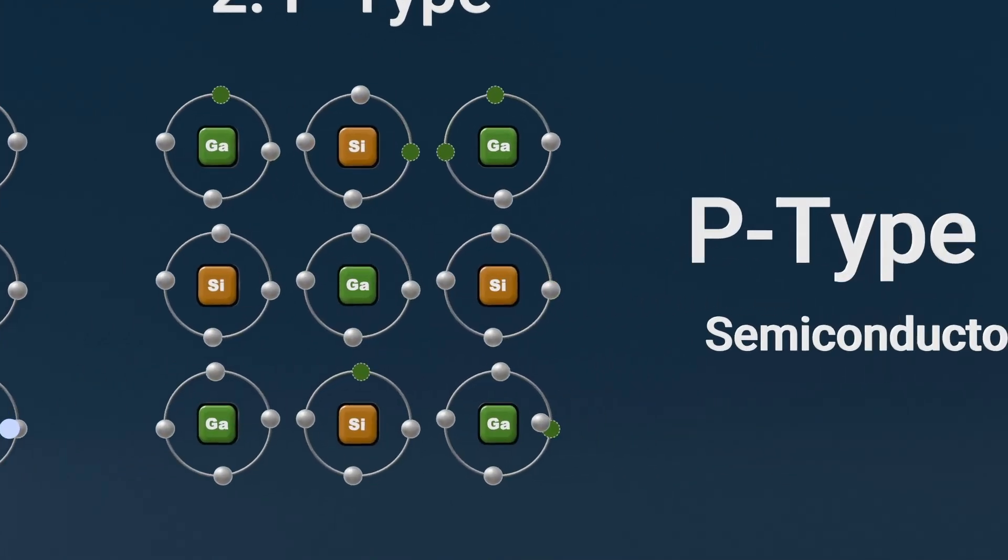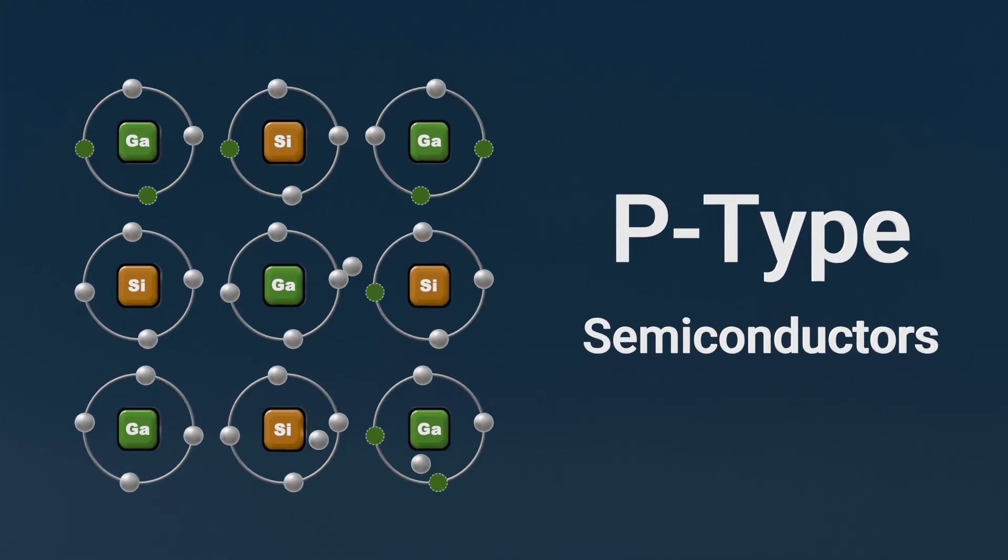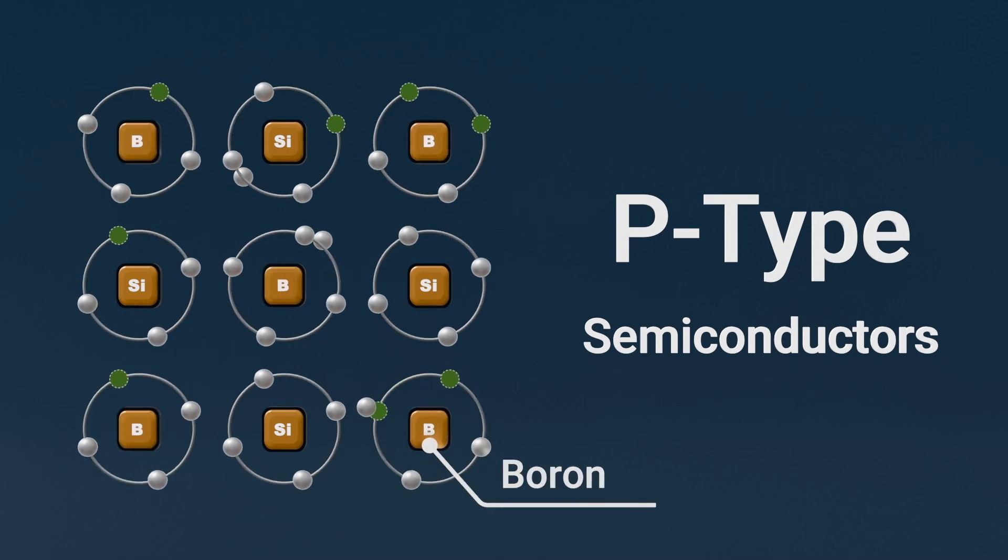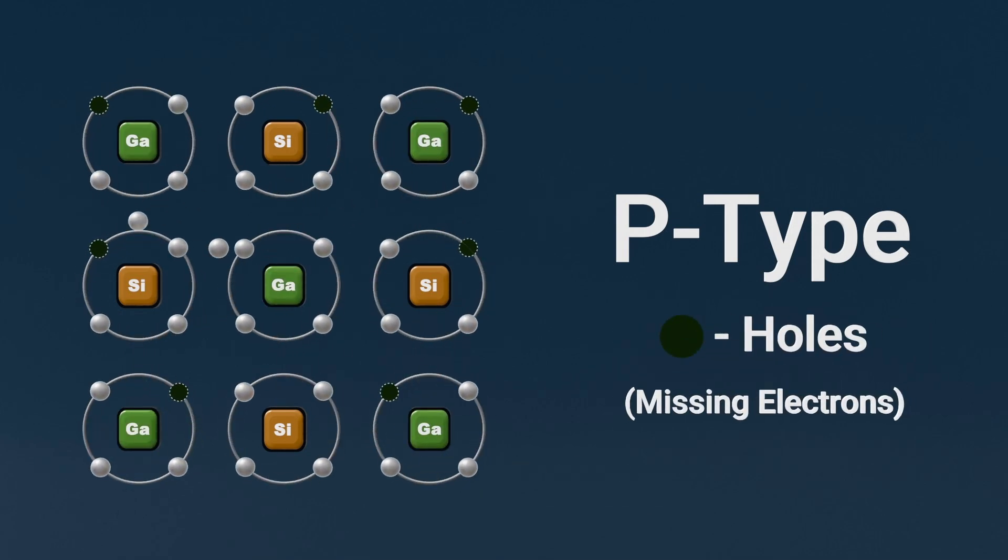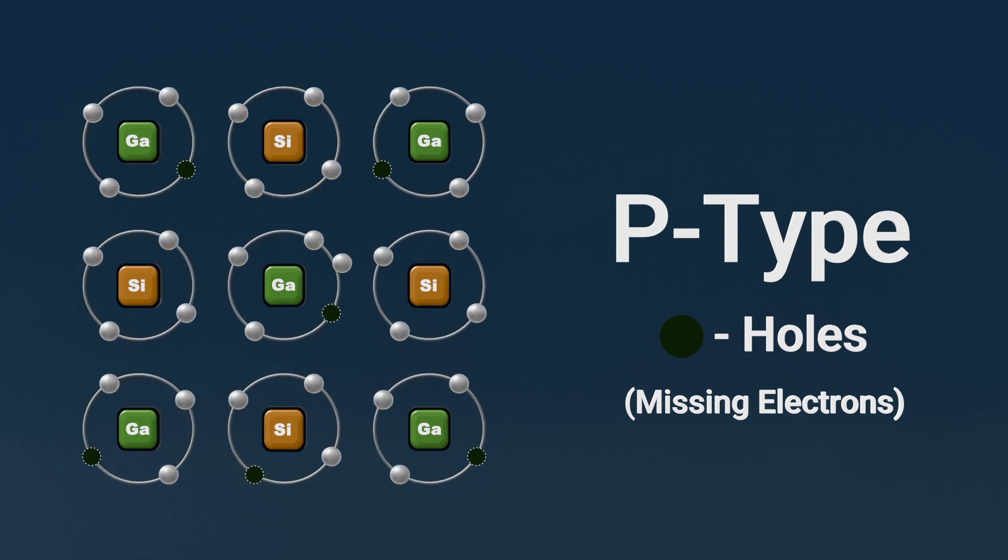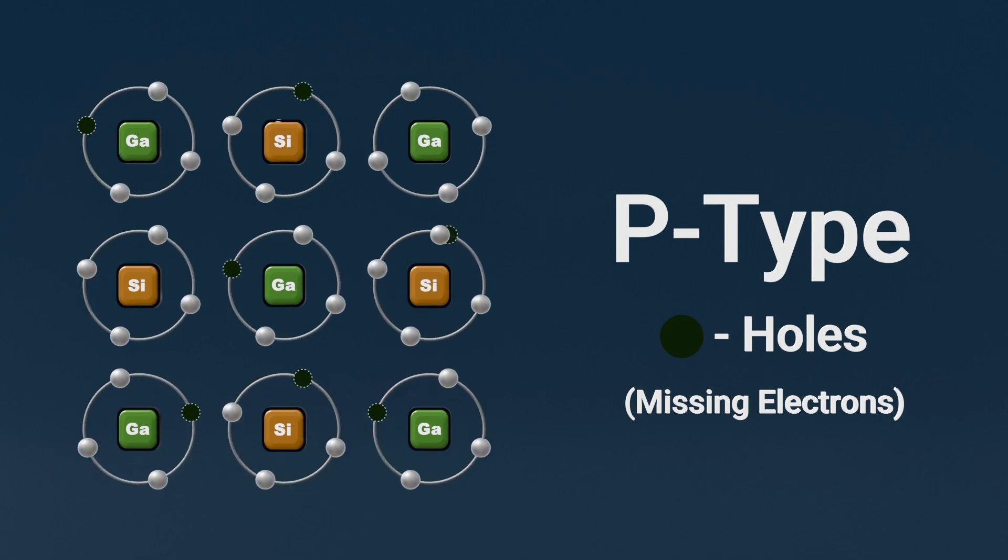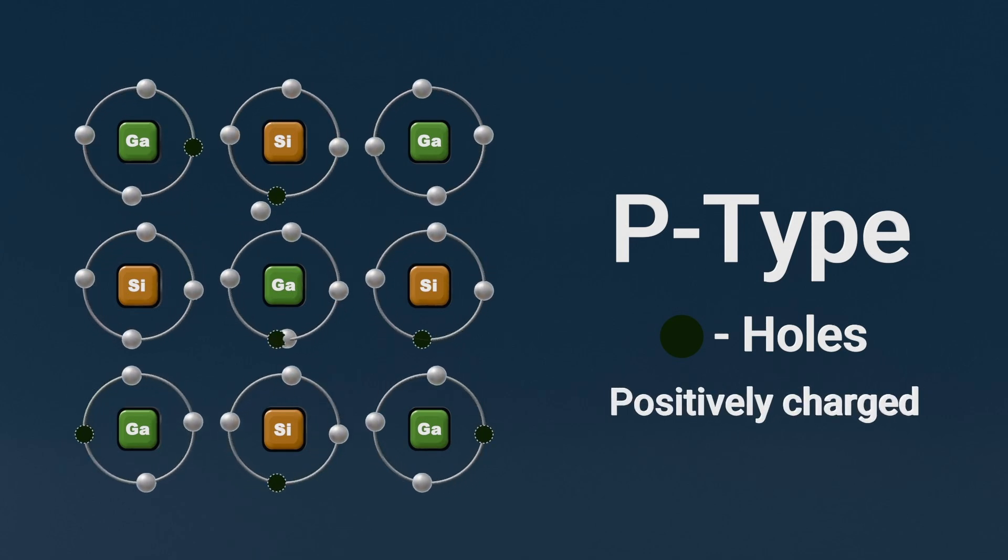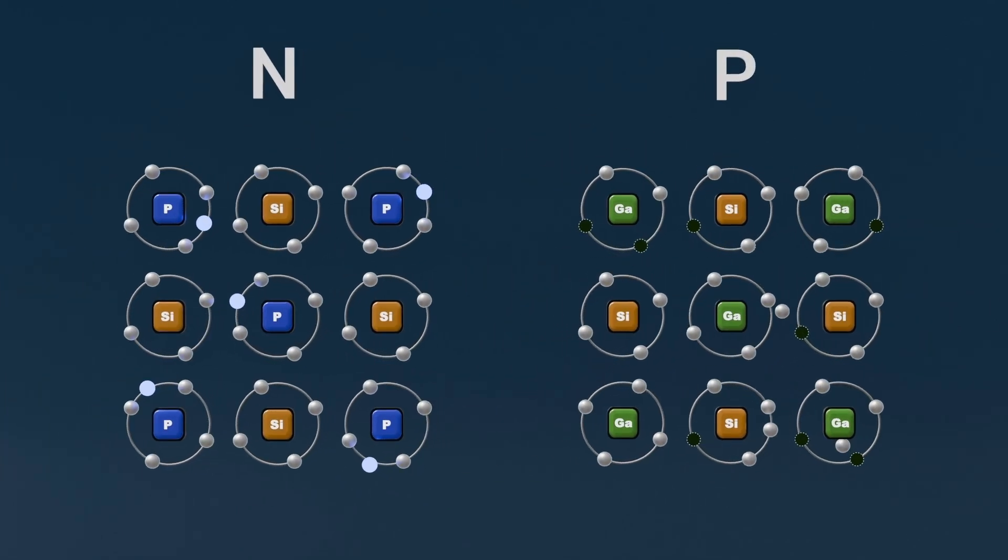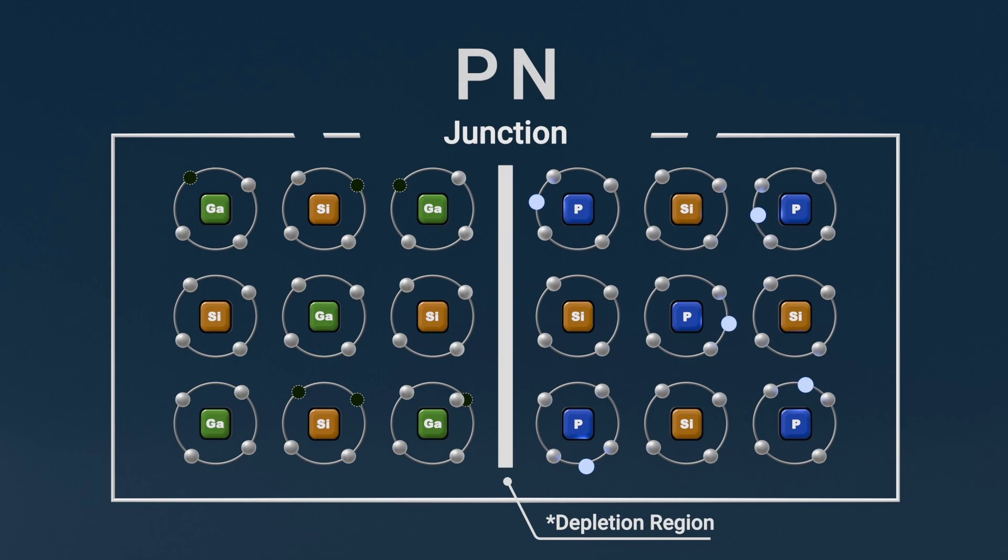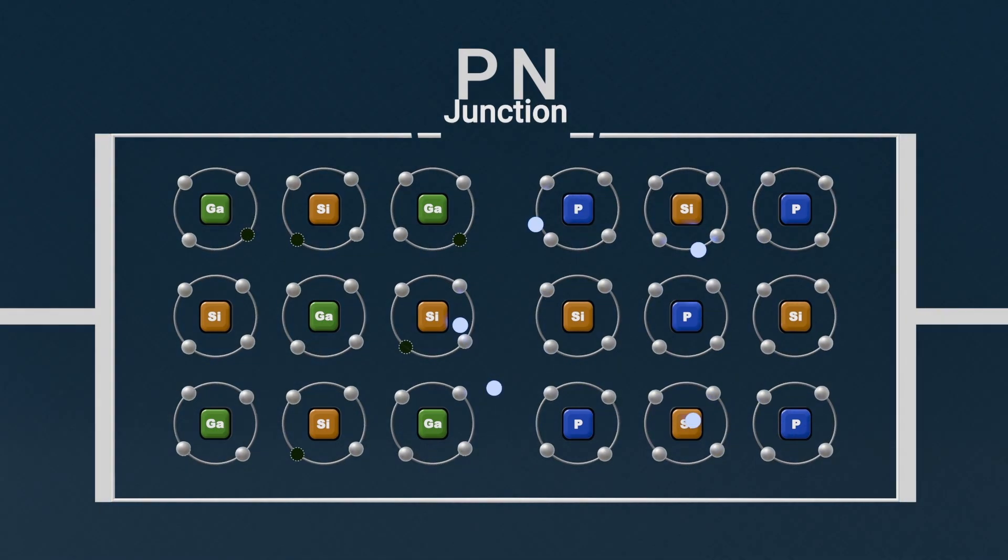Number two, p-type semiconductors. These are doped with elements like boron or gallium, which create holes or missing electrons. Electrons from nearby atoms jump into these holes, effectively creating positive charge carriers. This combination of n-type and p-type semiconductors leads to the creation of the p-n junction, a critical component in modern electronics.